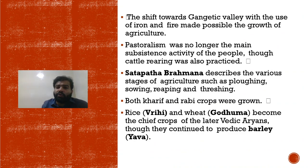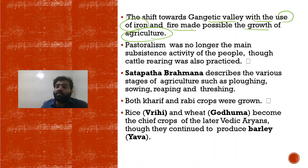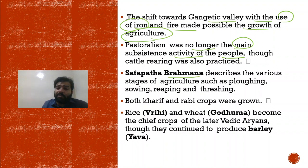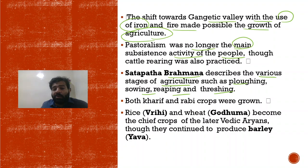The shift towards the Ganga Valley, with the use of iron and fire, made possible the growth of agriculture. Pastoralism was no longer the main subsistence activity — people slowly moved towards settled habitation. The Satapatha Brahmana describes the various stages of agriculture such as plowing, sowing, reaping, and threshing. A question can be framed about which text discusses the stages of agriculture.